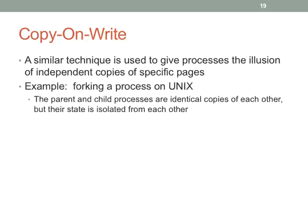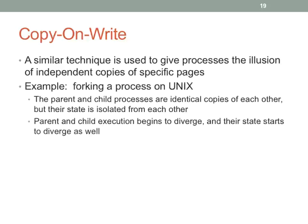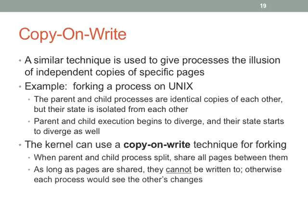Copy-on-write — forking is a really common example of where it's really helpful. All of you had some experience with that on the first project, forking off processes that were identical copies but then immediately turning around and exec-ing something. We can make that process really fast by using a private copy-on-write mechanism. Historically, forking was a really expensive operation in original Unix systems because they would do a copy immediately, and if you had a large program that forked, it would be making a copy and that was just hideously slow. This copy-on-write mechanism was actually necessary to make this a practical approach.